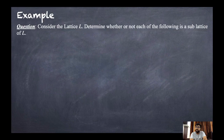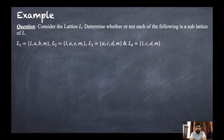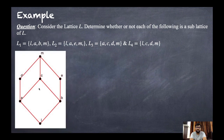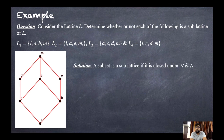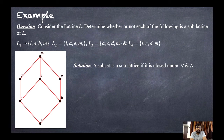Consider the lattice L and determine whether each of the following is a sublattice of L or not. We have four sets: L1, L2, L3, and L4. The Hasse diagram is the cube-shaped one. A subset is a sublattice if it is closed under meet and join — that means it must contain the GLB and LUB within the same set.